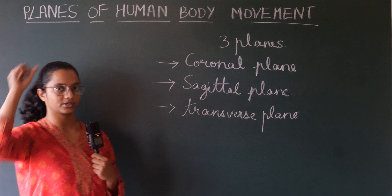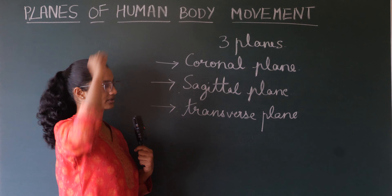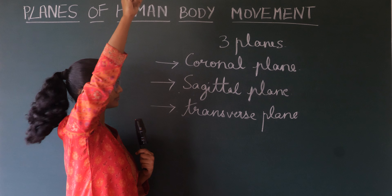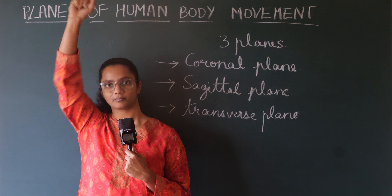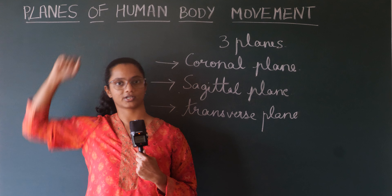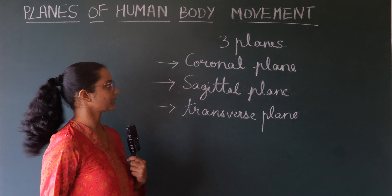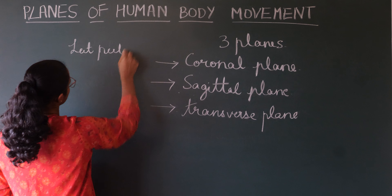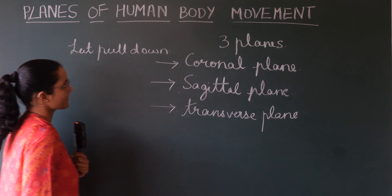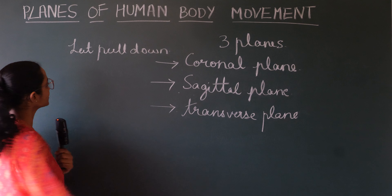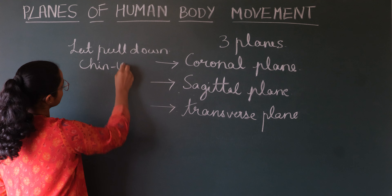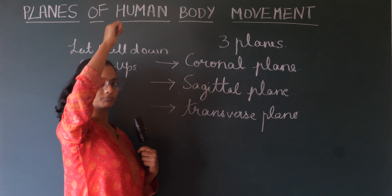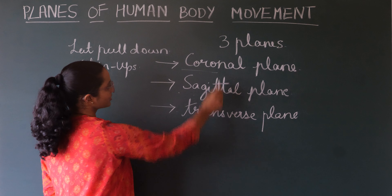For example, if I do the lat pull-down — observe the movement of the body with the hand. I hold the handle and I pull it. Observe how this movement is taking place — it happens in the coronal plane. There are other movements also like chin-ups, where you pull your body upward and hold the support. This is also happening in the coronal plane.